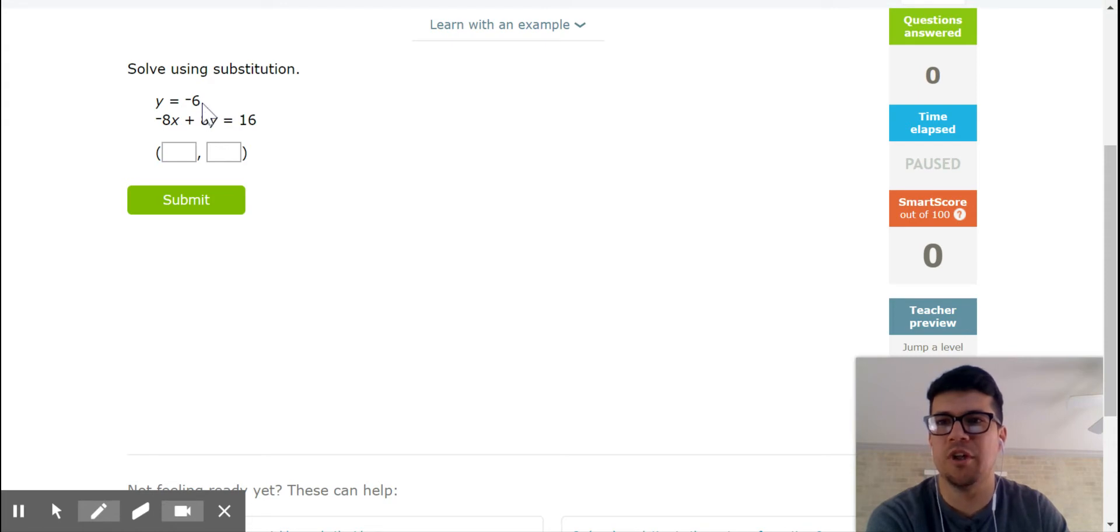First equation tells me y equals negative 6. Second equation in linear standard form tells me 8x plus... and I need to find the pair that is both these equations. So when y equals negative 6, we already have the answer for our y coordinate.